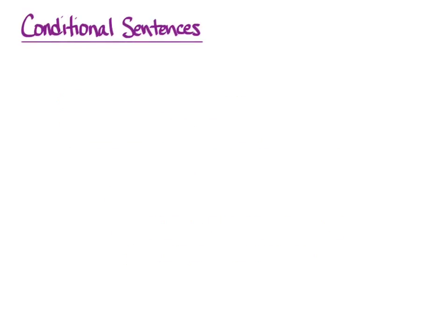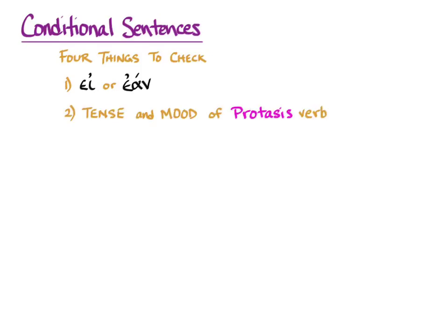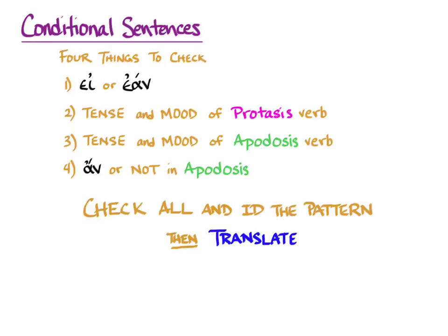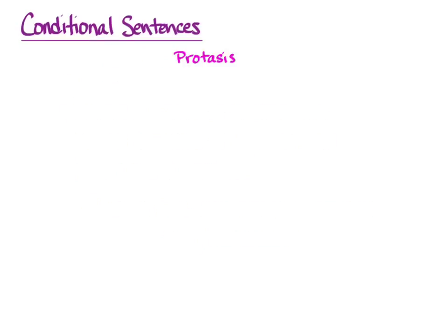In Greek, to know how to translate a conditional sentence, you need to check four things: whether the 'if' is εἰ or ἐάν, what the tense and mood of the protasis verb is, what the tense and mood of the apodosis verb is, and whether or not there's an ἄν in the apodosis. Check all four things, identify the Greek conditional sentence pattern, and then translate. So let's go on and learn those patterns, which each have a protasis and an apodosis.